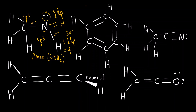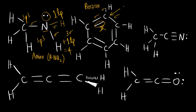For benzene, taking any one carbon: there are one, two, three sigma bonds and one pi bond (not counted). Steric number three means sp2 hybridization. All six carbons in benzene are sp2 hybridized, which is consistent with what we know about benzene's planar structure.